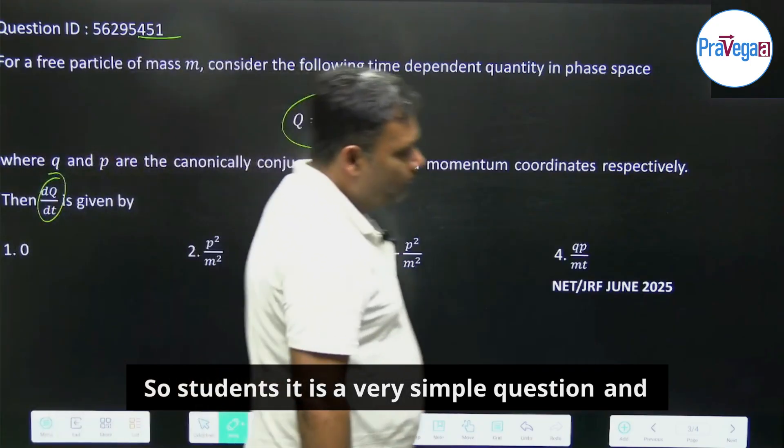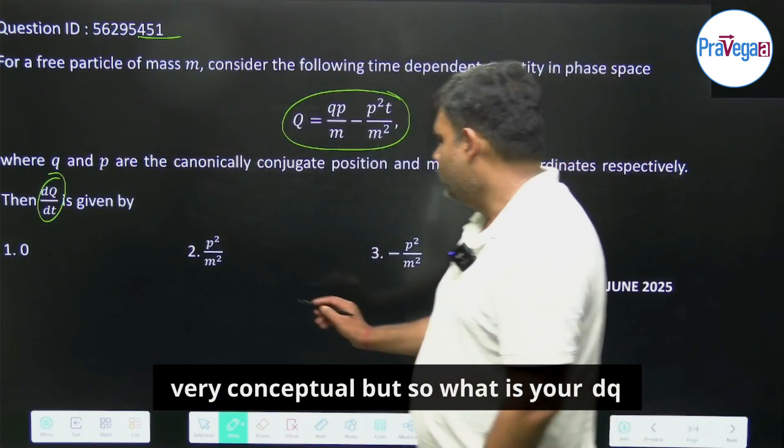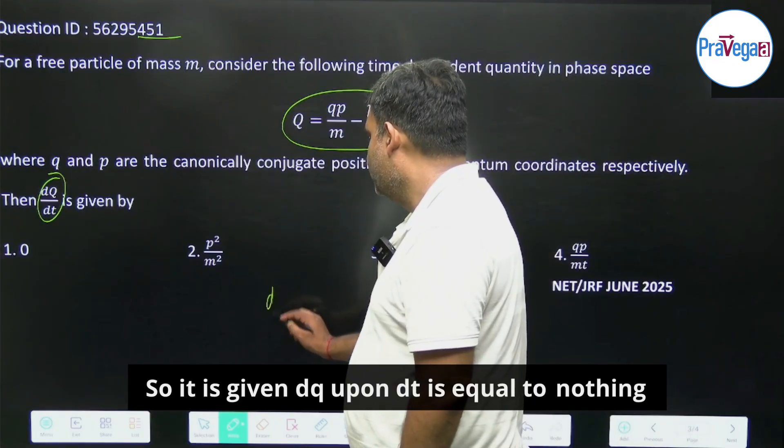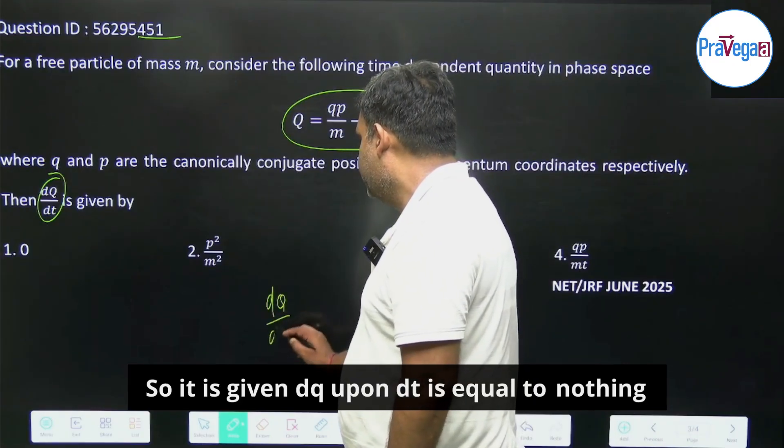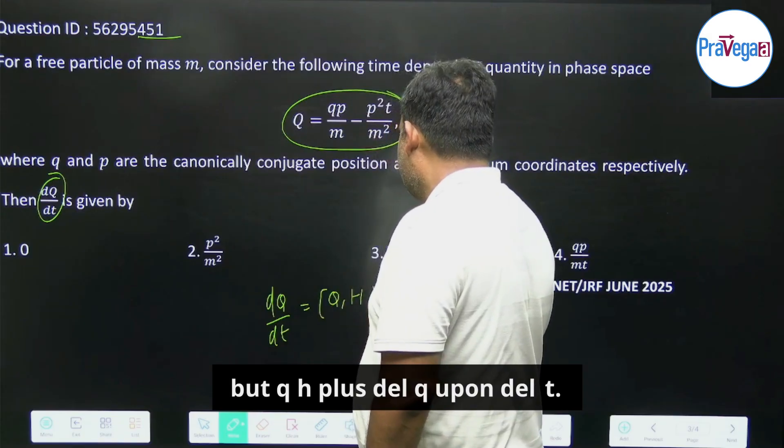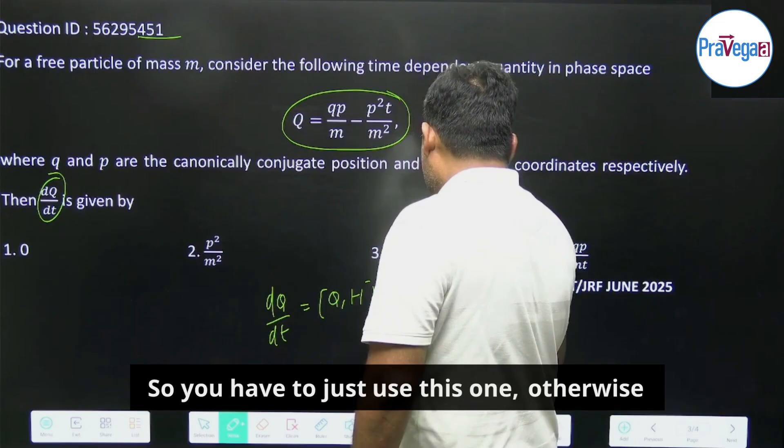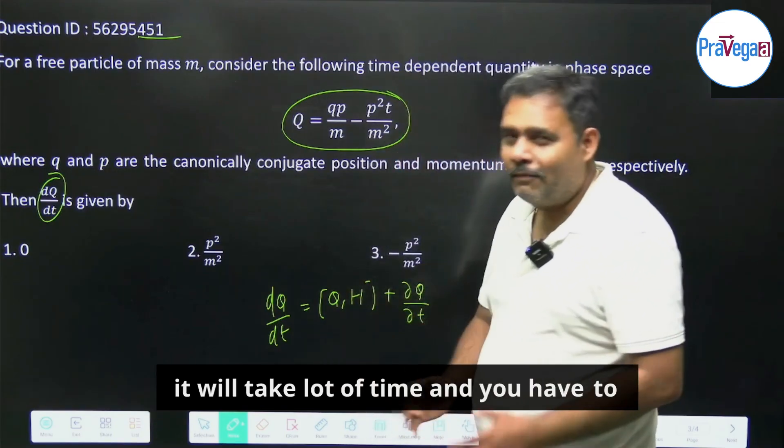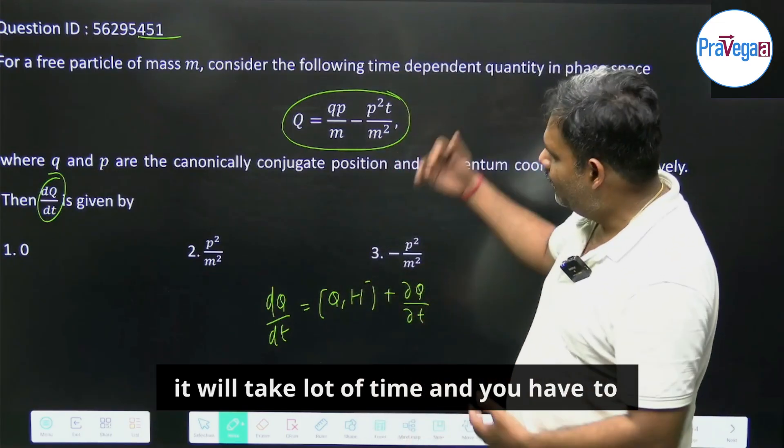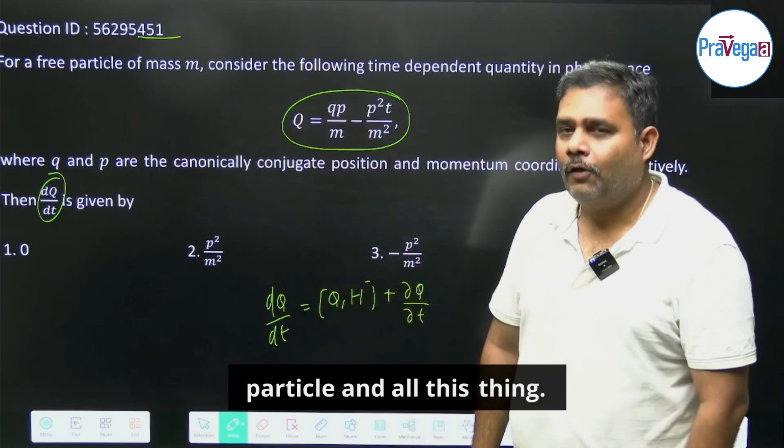So students, it is a very simple and conceptual question. dQ upon dt is given by Q,H plus del Q upon del t. So you have to just use this one, otherwise it will take a lot of time to solve the equation of motion for this free particle and all.